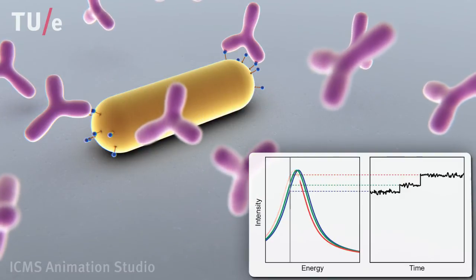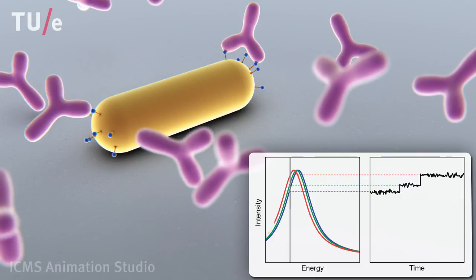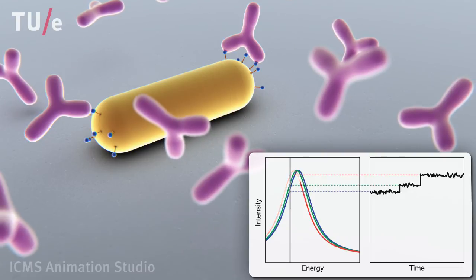This will make it possible to determine distributions of molecular properties instead of merely an ensemble average in complex samples, such as blood or living cells.